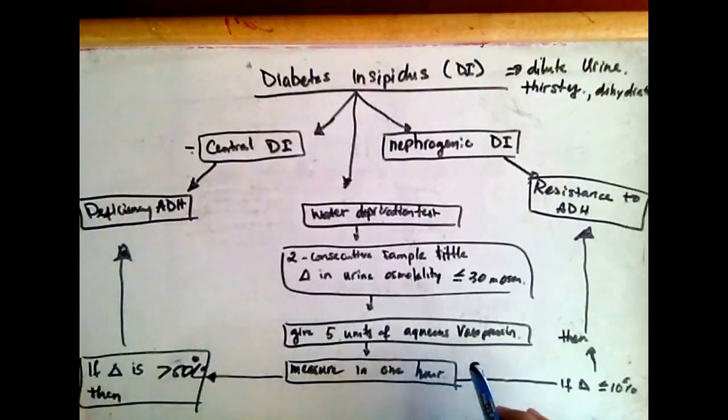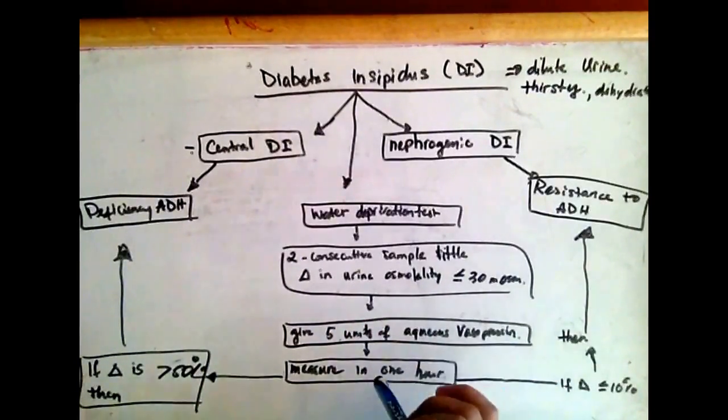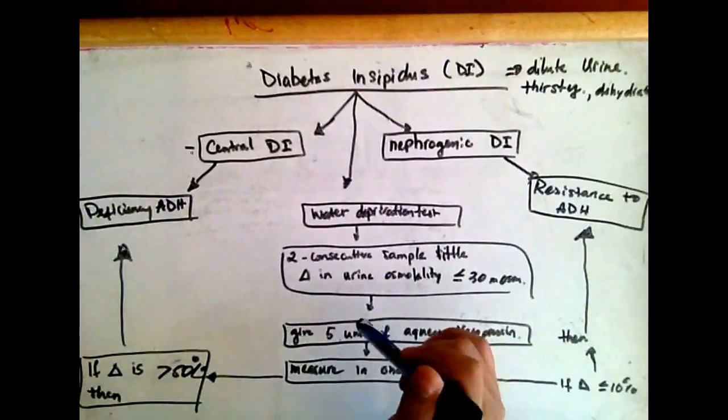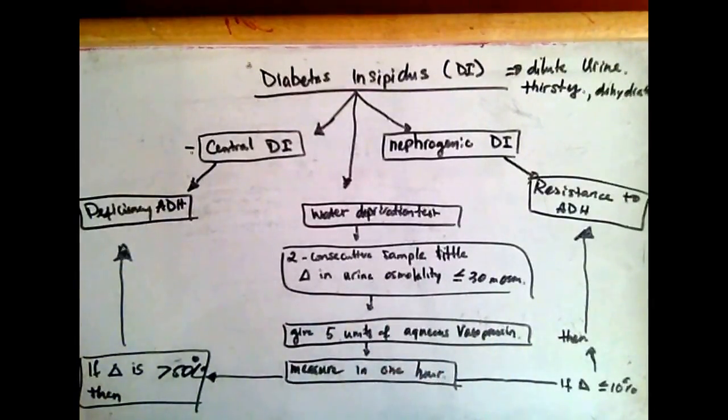Because if we give them five units of aqueous vasopressin, and if the patient has central diabetes insipidus, which means that they didn't produce enough ADH,